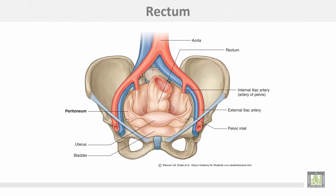This is the rectum — the sigmoid colon ends at the third piece of the sacrum to start the rectum.